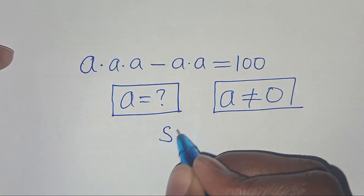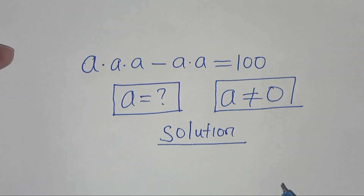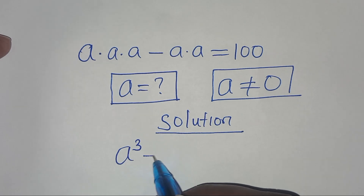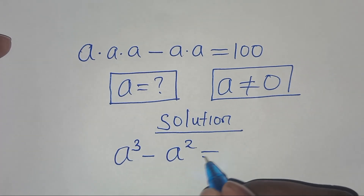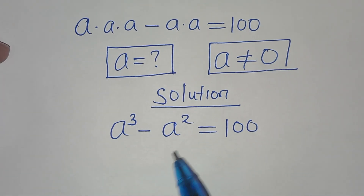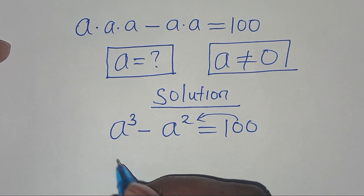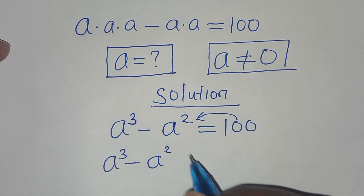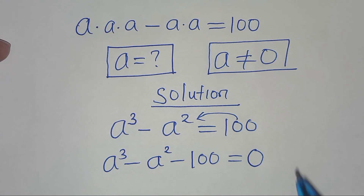Let's present a solution from here. We have that a times a times a, this is a to the power of 3, then subtract a times a, this is a to the power of 2. This is equal to 100. Let's take 100 on the left hand side, so that we have a to the power of 3, minus a to the power of 2, subtract 100, this is equal to 0.